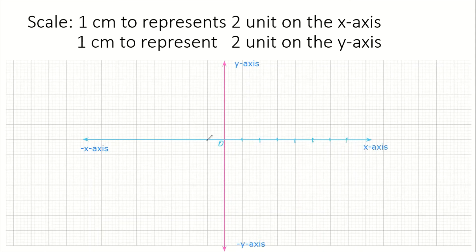We'll do the same thing on the other side of the origin — marking off one centimeter intervals all the way along the negative x-axis as well, so that all the strokes are equally spaced.